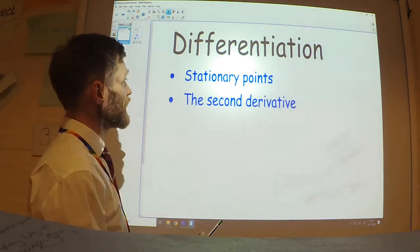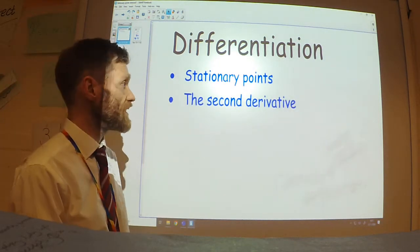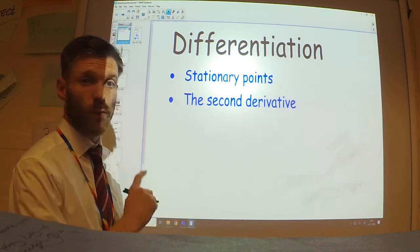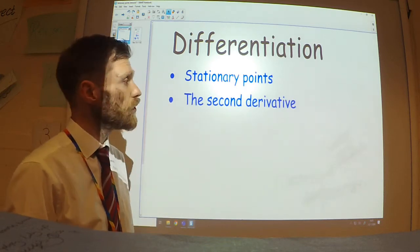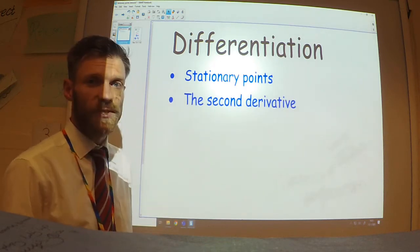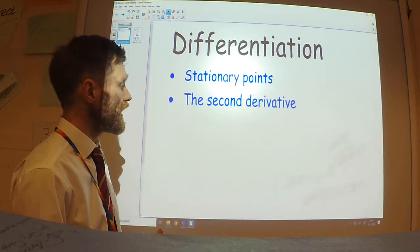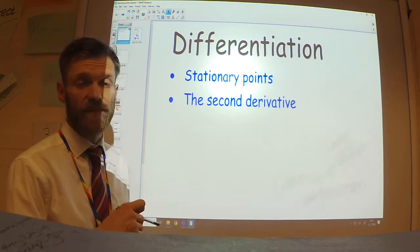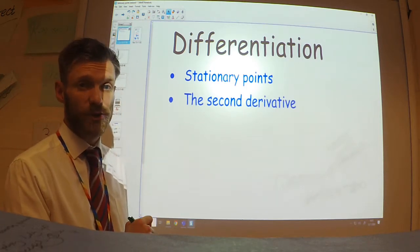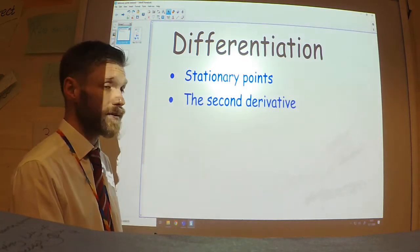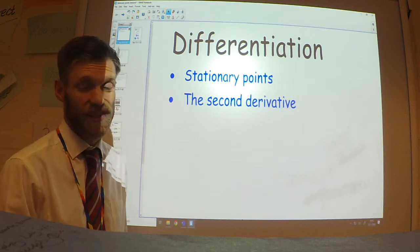In this video, we're going to see how we can use differentiation to find the coordinates of stationary points, or turning points as you knew them at GCSE, and how we can then find the second derivative and use that as a shortcut to find out what type of stationary point it is.